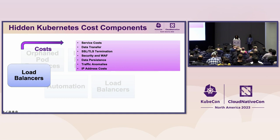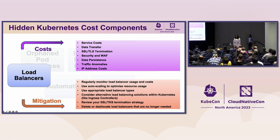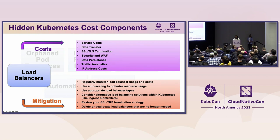If your load balancer provider offers protection against DDoS attacks, this can be especially costly if you are experiencing frequent attacks. To mitigate load balancer costs: monitor your load balancer usage and costs regularly, consider alternatives like ingress controllers, review your SSL and TLS Kubernetes service strategies to reduce costs, and delete load balancers that are no longer needed.